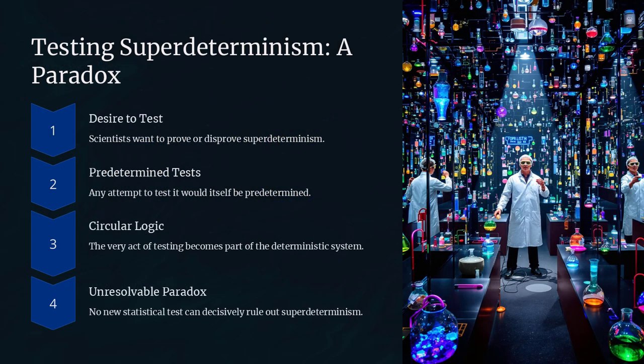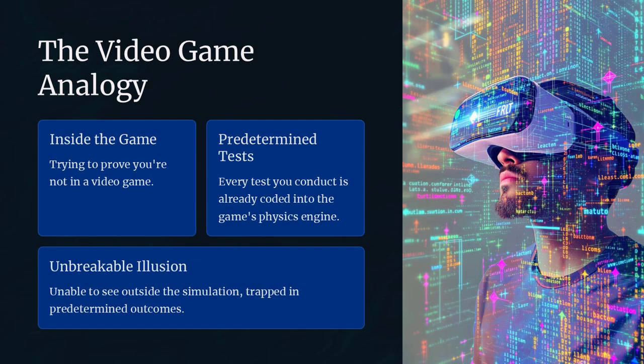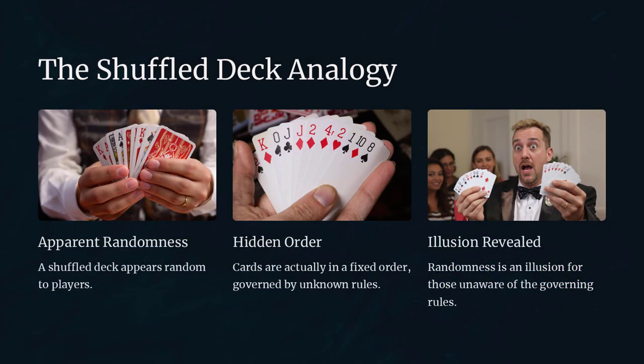What if every event, including the choice of measurement settings, was already predetermined by the initial conditions of the universe? This is where super-determinism comes in.